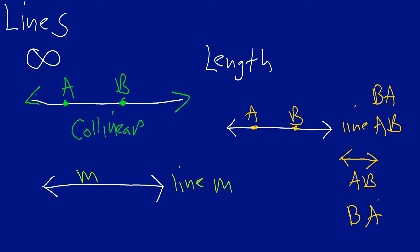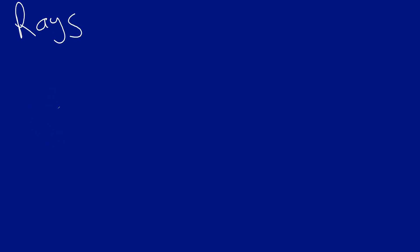Now we're going to move to talking about rays. Rays are a little more unique in that they are just like lines, but they have a specific start point and then they go off forever in one direction. Here's an example: I have my endpoint — also called the origin — right here, and then the line goes off in that direction forever. I'll label this point A and the next point B.